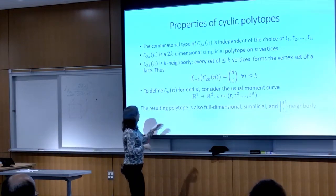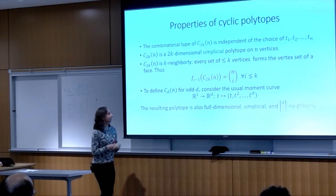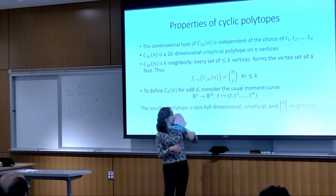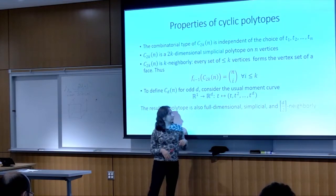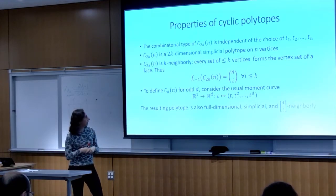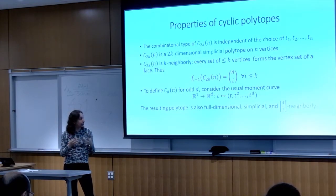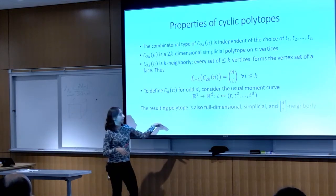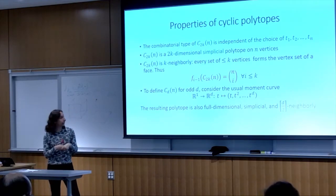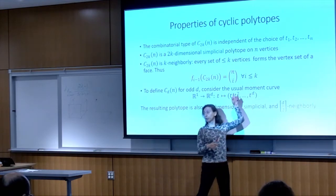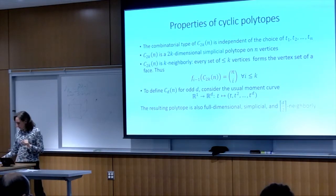If d is odd, we use the usual moment curve: a map from R to R^d taking t to (t, t², …, t^d). You pick N distinct real numbers, take their images, and take the convex hull. It's still full-dimensional, still simplicial, still floor(d/2)-neighborly even if d is odd, and if d is even the two notions (trigonometric and usual moment curve) coincide up to combinatorial isomorphism.